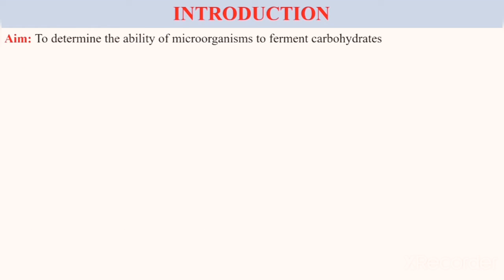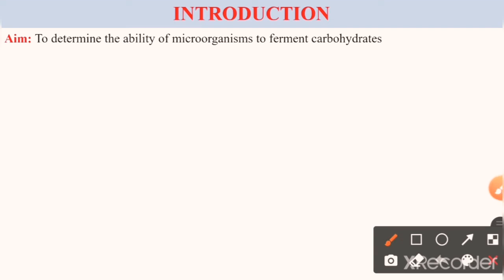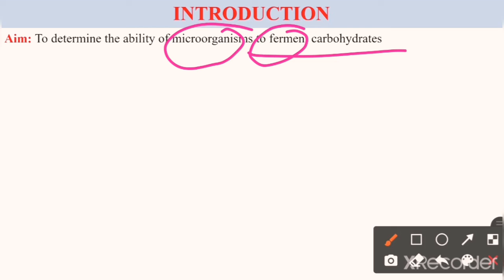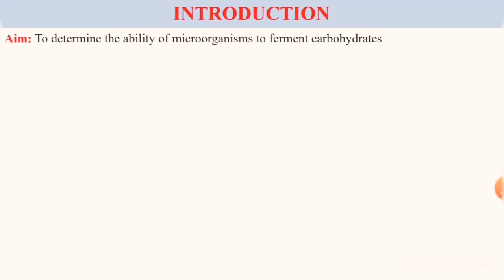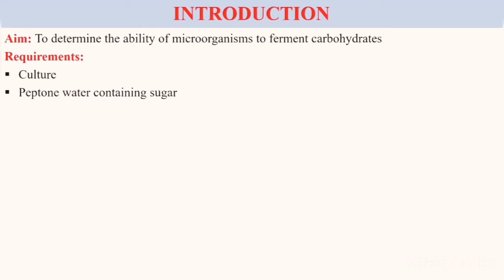Our aim is to determine the ability of microorganisms to ferment carbohydrates. There are different types of carbohydrates present in nature, but each and every microorganism can't ferment each and every carbohydrate. The carbohydrate is specific for each and every microorganism, so that fermentation ability of microorganisms we have to check through the sugar fermentation test.